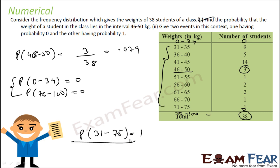Any student you pick from this class will fall in the weight range 31 to 75. We saw that all students lie in this range, so probability is 1. None of the students lie in the range 0 to 34 or 76 to 100, so that probability is 0.